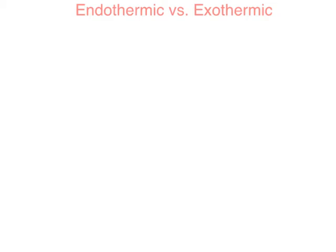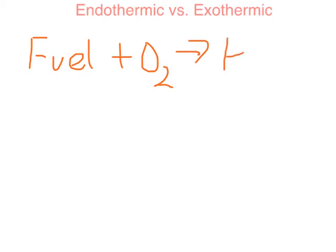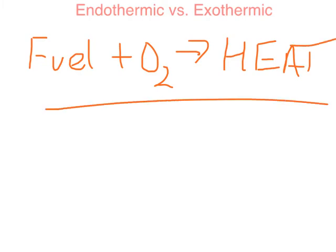For instance, a combustion reaction is a good example of a reaction that gives off heat. So we have some sort of fuel plus oxygen, we're going to get some sort of products, plus most importantly, we're going to get heat. And it's this type of reaction right here